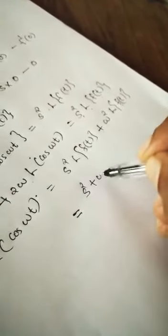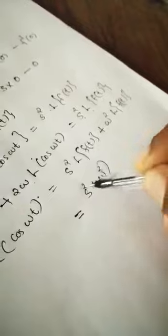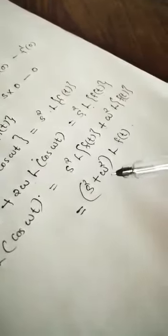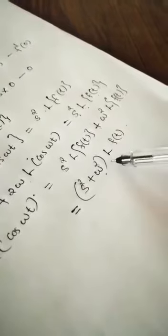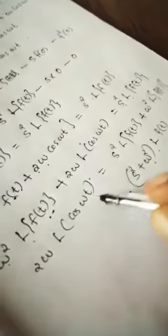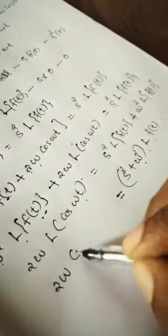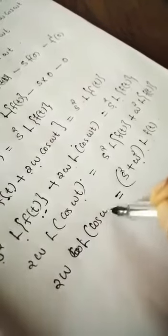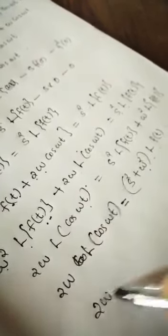Grouping the left-hand side: (s² + ω²) · L{f(t)} equals 2ω · L{cos(ωt)}. Therefore, (s² + ω²) · L{f(t)} equals 2ω.